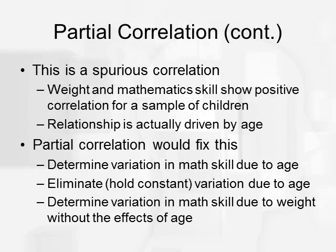So again, this is probably a spurious correlation. Weight and mathematical skill are showing a positive correlation in these children. But really, age is what's driving that relationship. And so we can use partial correlation to fix the relationship. So we can determine the true relationship between weight and mathematical skill. We can partial out the variance accounted for by age to see if weight and math skill still show a positive correlation. What we end up doing is we hold the variation in math skill constant due to age. We eliminate this variation. And then without age left in the equation, without math skill due to age in the equation, we try to see whether or not weight still has those effects.